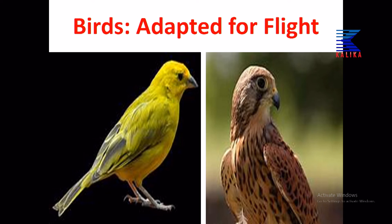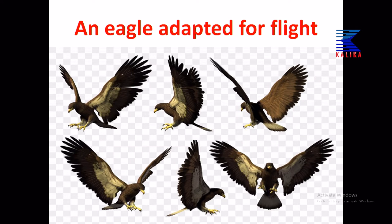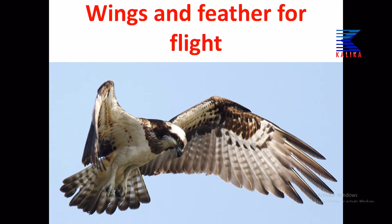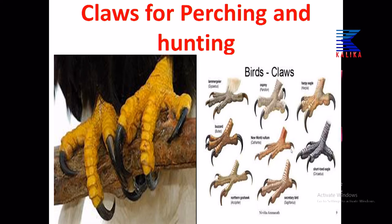Birds adapted for flight: sparrow and eagle. The beak, neck, feathers, wings, and legs are all adapted for flight. An eagle has strong wings and feathers for flight and very strong claws ready for hunting. Claws are for perching — the branch of a tree is gripped by the claws of the bird so it can sit without falling. Bird claws vary — especially in hunting species, they are very strong with very strong nails.